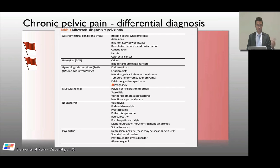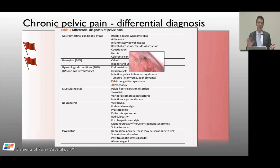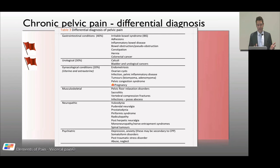The differential diagnosis covers GIT, urological, and gynecological causes — uterine and extra-uterine. Endometriosis is another discussion — it occurs with and without chronic pelvic pain. Don't forget musculoskeletal issues: sacroiliac joint, vertebral fractures, and all the red flags. Consider neuropathic features, ilioinguinal neuralgias, radiating neuropathies from the back, tumors, infections, and psychiatric conditions as well.